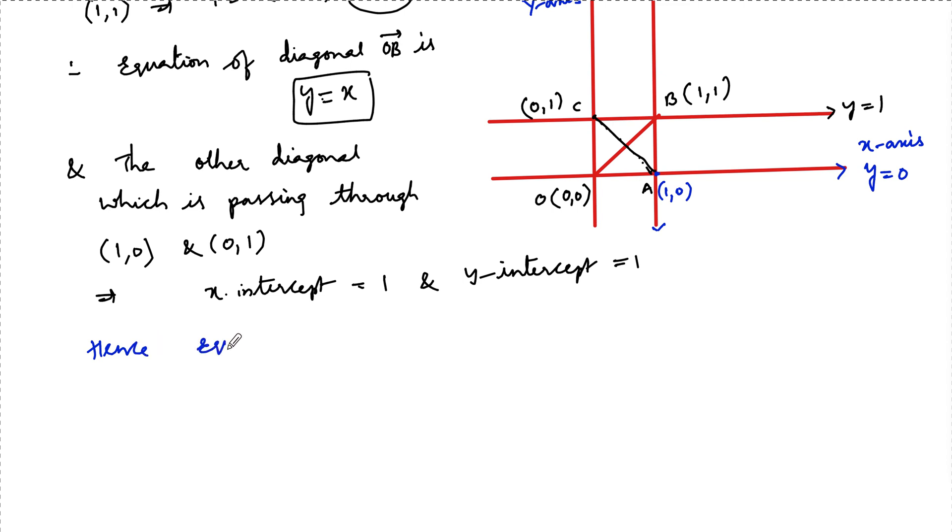Hence, equation of the diagonal AC is given by x upon 1 plus y upon 1 is equal to 1, which is intercept form of a line. So that is x plus y is equal to 1 or we can write y is equal to 1 minus x.